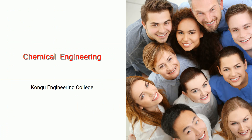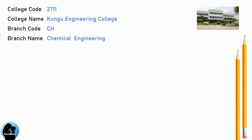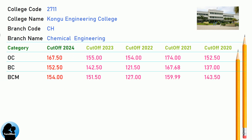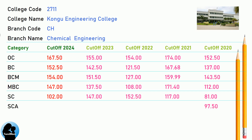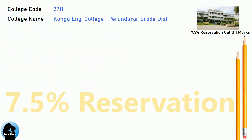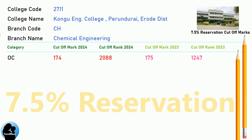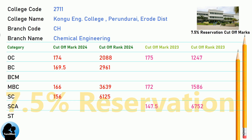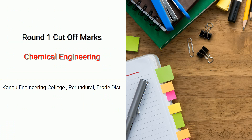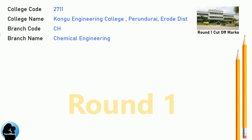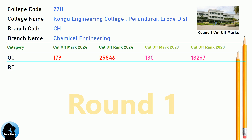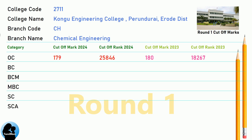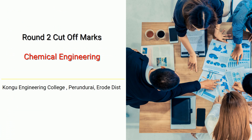DNA cutoff for Kongu Engineering College in Chemical Engineering. DNA 7.5 reservation cutoff, Round 1 cutoff, and Round 2 cutoff for Kongu Engineering College in Chemical Engineering.